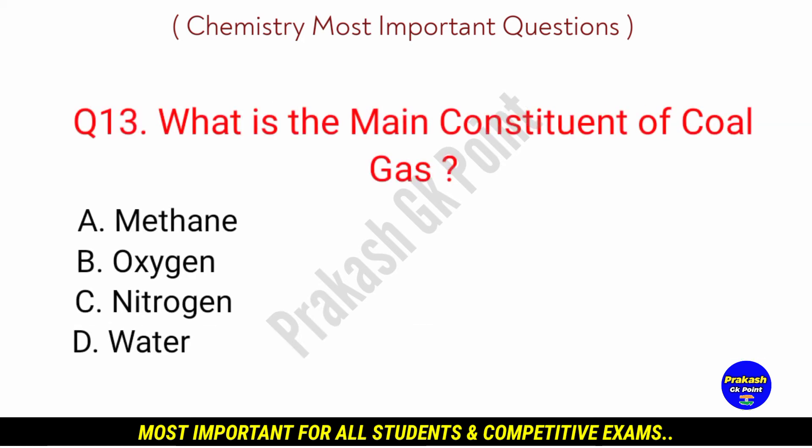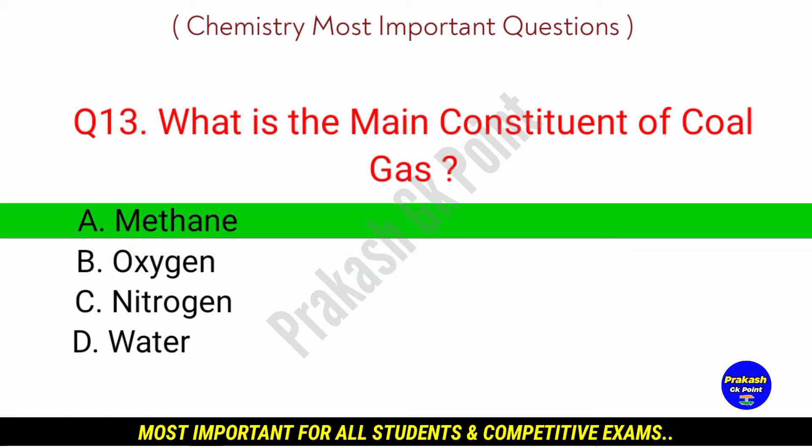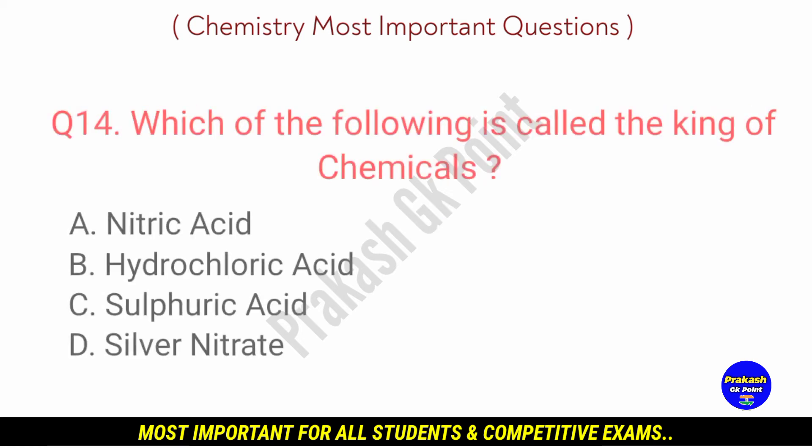Next question: what is the main constituent of coal gas? Answer: option A, Methane.